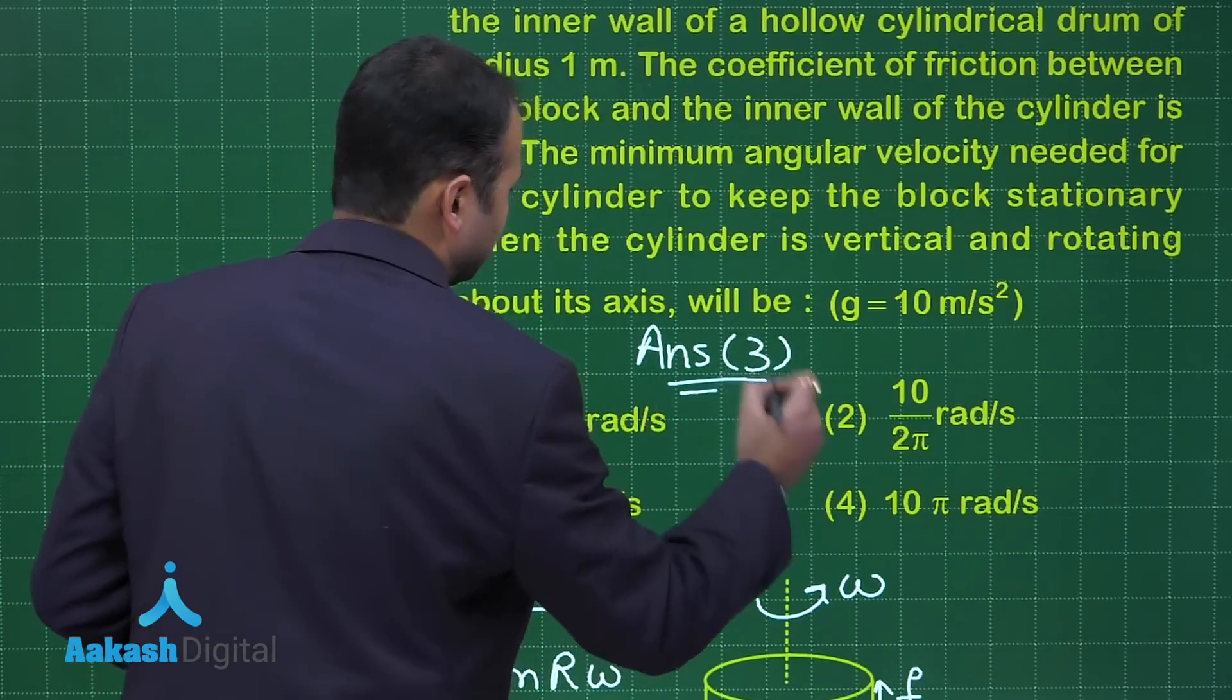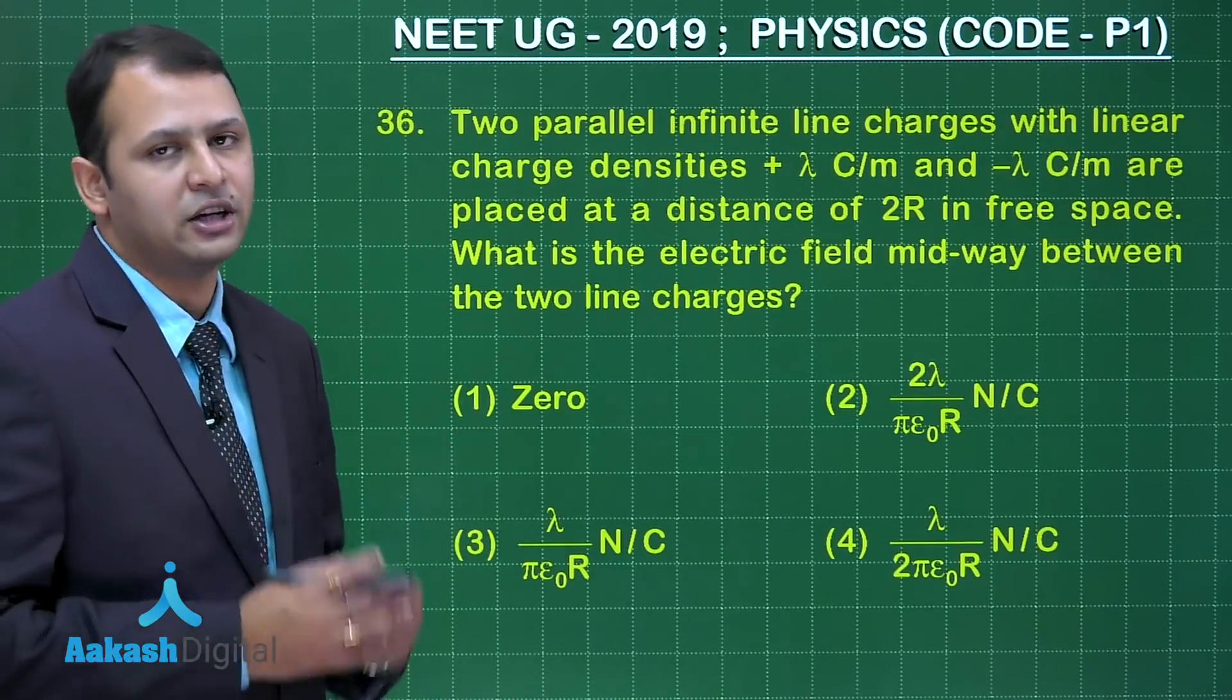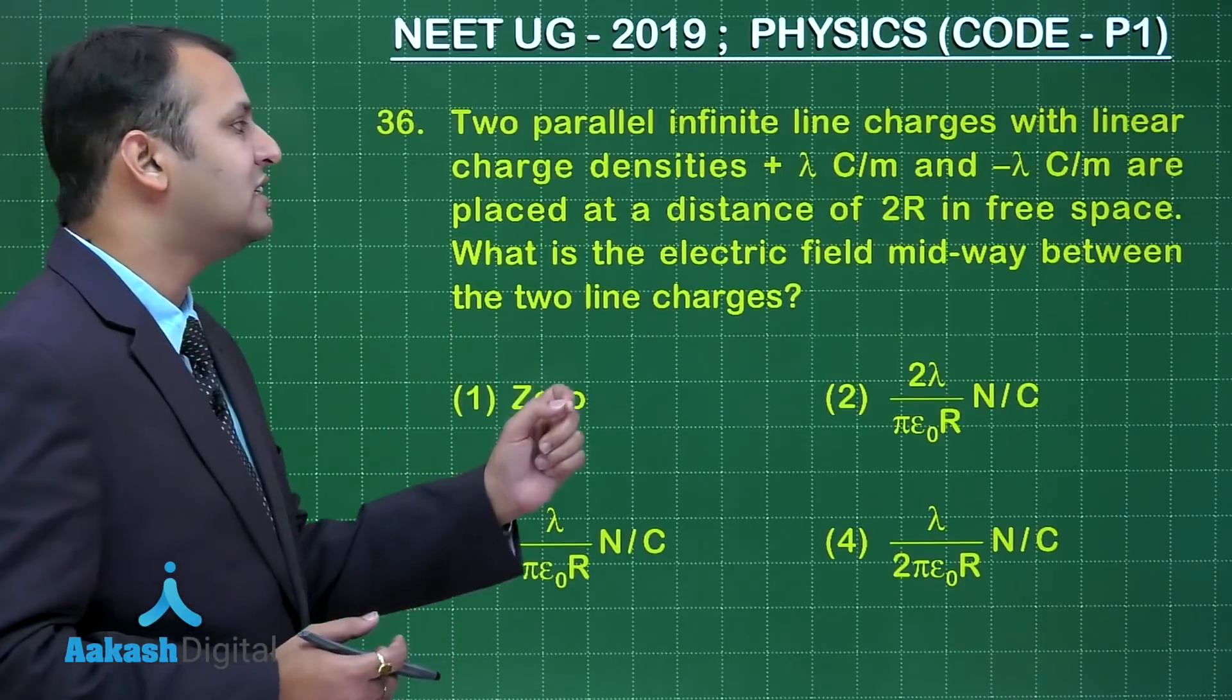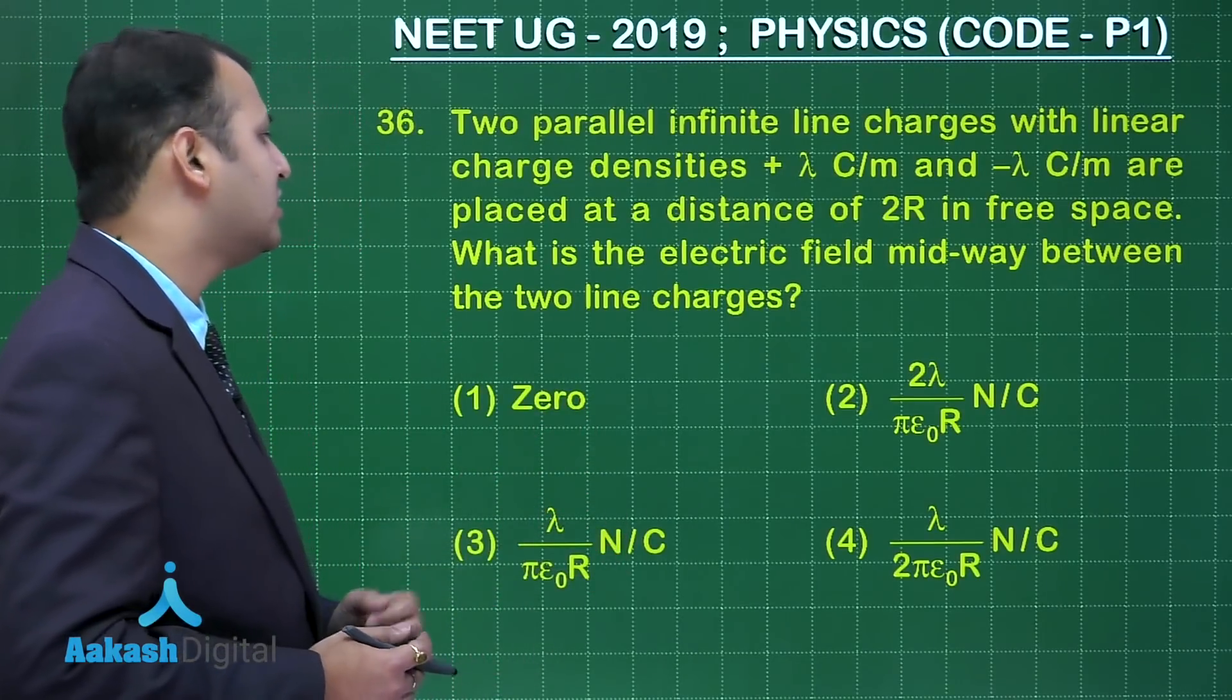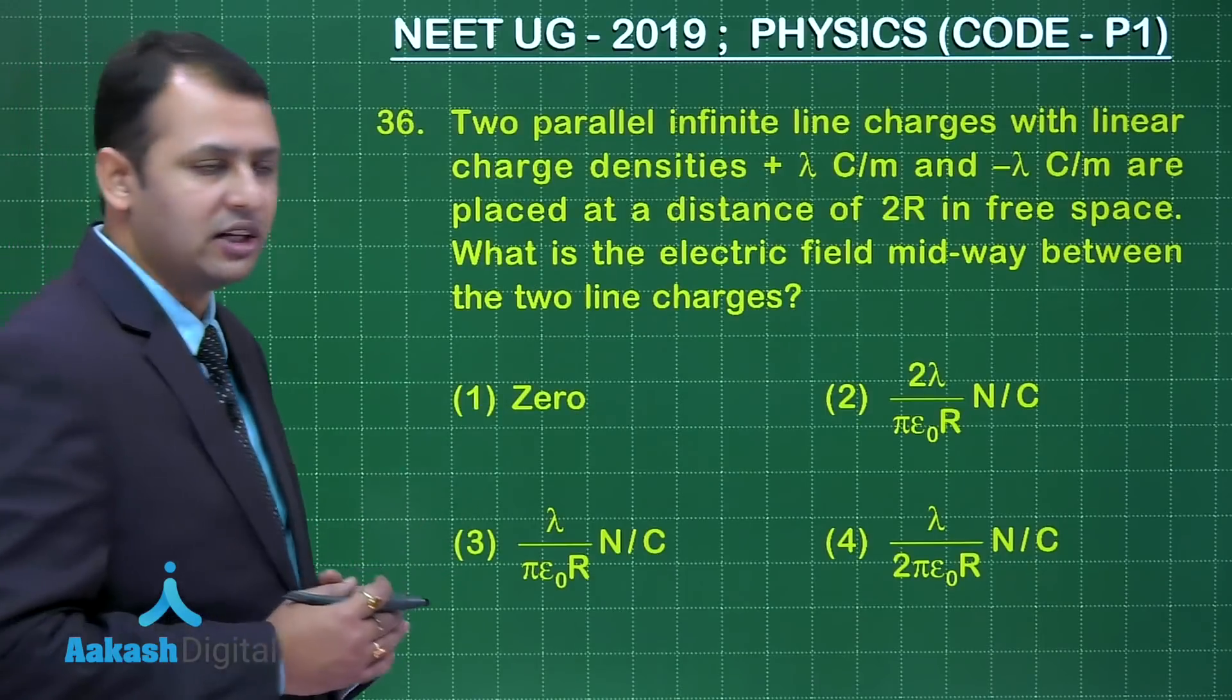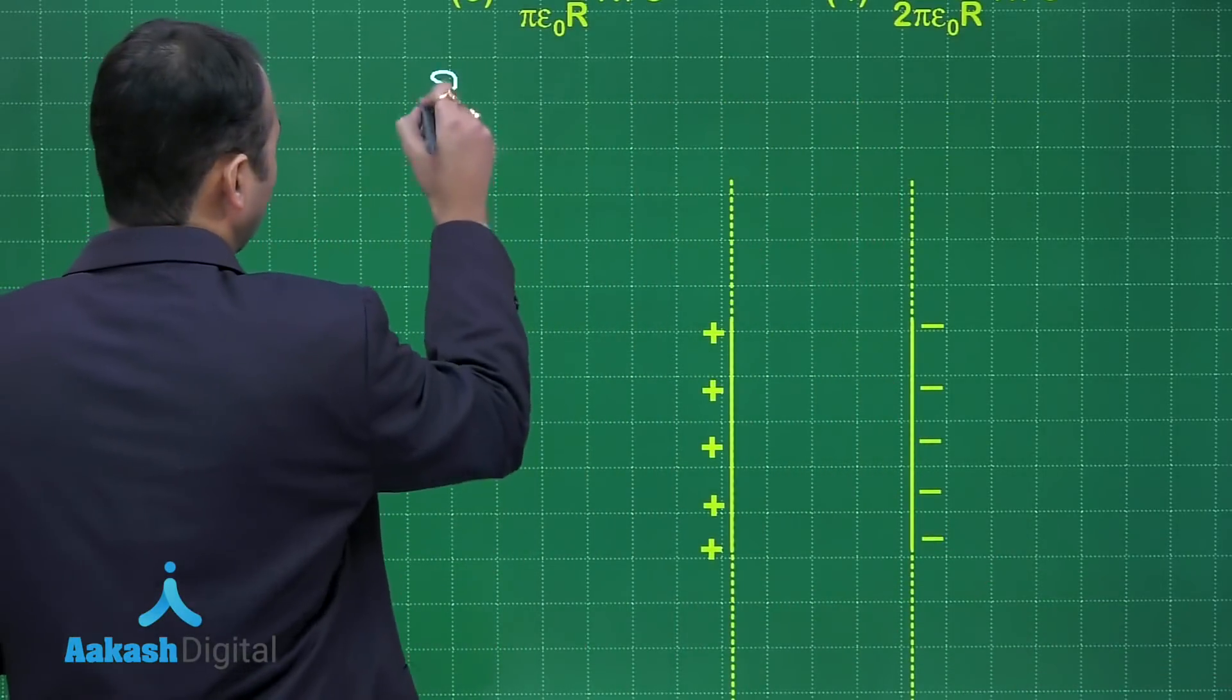Now let's move on to our next question, that is question number 36. The question belongs to chapter electrostatics, that is electric fields and charges. Two parallel infinite line charges with linear charge densities as +λ coulomb per meter and -λ coulomb per meter are placed at a distance of 2R in free space. What is the electric field midway between the two line charges? In order to solve this you need to see this diagram first, so I have made one already for you.